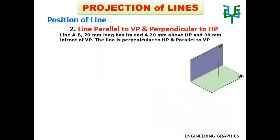Here is a problem: A line AB, 70mm long, has its end A 20mm above HP and 30mm in front of VP. The line is further perpendicular to HP and parallel to VP.